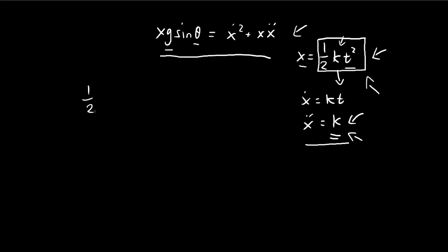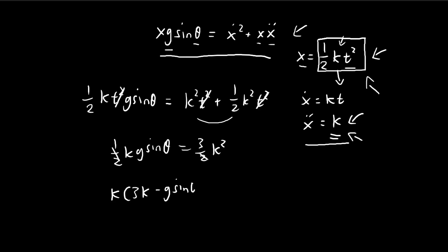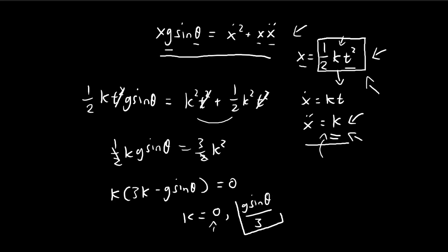On the left-hand side we have ½kt² · g sinθ. On the right-hand side, x-dot = kt so ẋ² = k²t², and x·ẍ = ½k²t². Adding those gives (3/2)k²t². Cancelling the t² terms, we get ½kg sinθ = (3/2)k², and the factors of two cancel. Rearranging: k(3k − g sinθ) = 0. This gives k = 0 (the trivial solution) or k = g sinθ / 3. So the acceleration of the dustpan is g sinθ / 3, and it is constant.